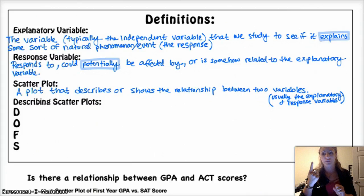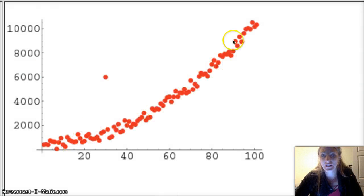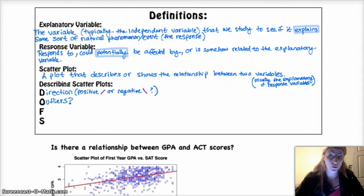You have to include the direction. Is it positive or negative? Two, are there outliers? This is an example of a scatterplot. That is an outlier. Everybody else follows the trend. This person is just like, F you all! I'm gonna do whatever I want!